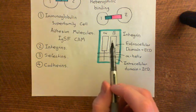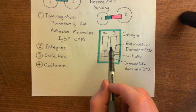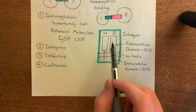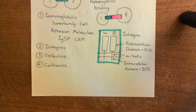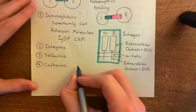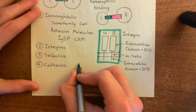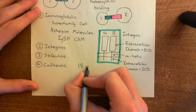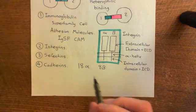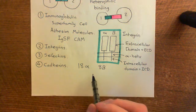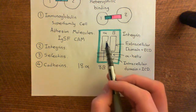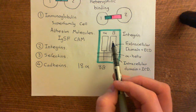There are a whole host of different alpha and beta subunits available. How many exist? 18 alpha subunits and 8 beta subunits exist. Potentially, there could be a massive number of integrins, because for every integrin you have to pick one alpha and one beta subunit.